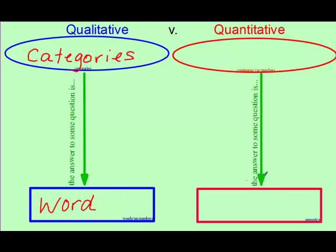On the quantitative side, we are talking about numbers. They are called continuous variables. They are things that can be measured. And when you ask them a question in the quantitative realm, their answer will be a number.